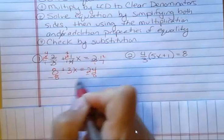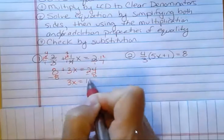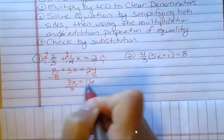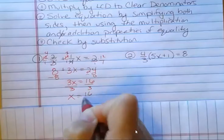Notice that 2 gets multiplied by the LCD even though it did not have a fractional part. I would subtract 8 from both sides. I get 3x equals 16. And dividing both sides by 3, you get x equals 16 thirds.